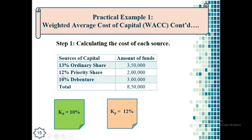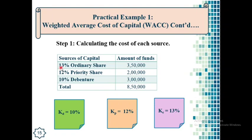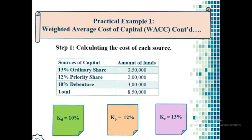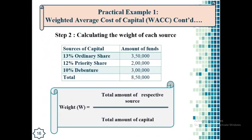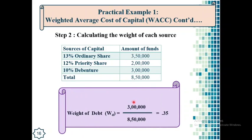The cost of preference share is 12% and the cost of ordinary share is 13%, both directly given in the question. Now the second step: calculating the weight of each source. The formula is total amount of respective source divided by total amount of capital. The weight of debt equals 3,00,000 divided by 8,50,000. Similarly, the weight of preferred stock is 2,00,000 divided by 8,50,000.